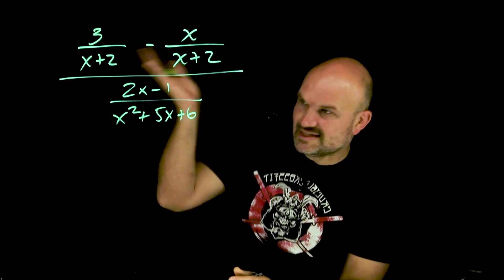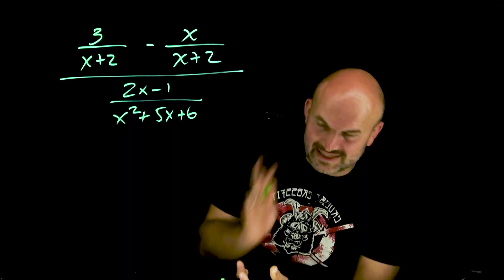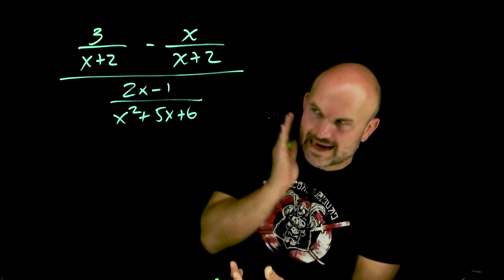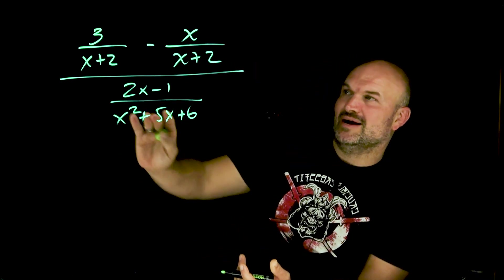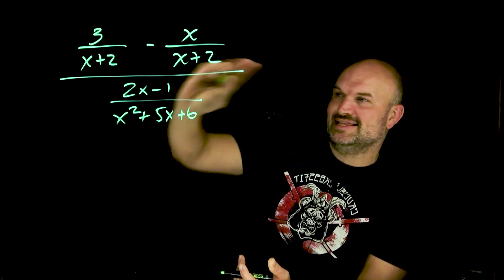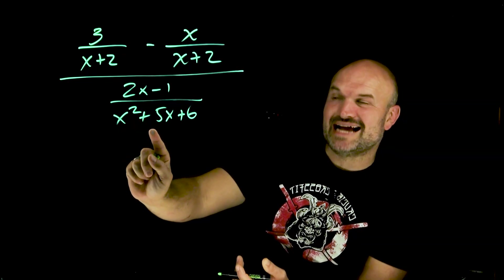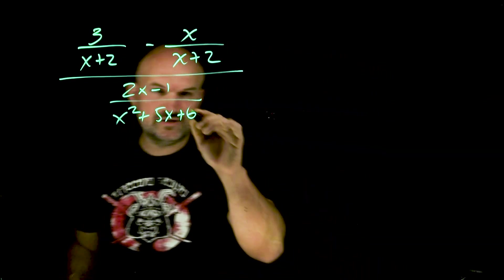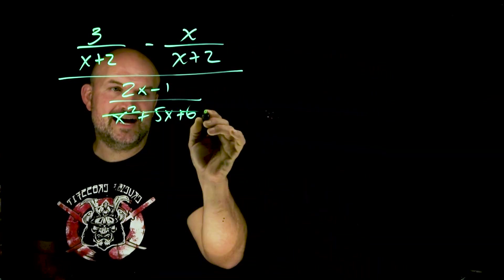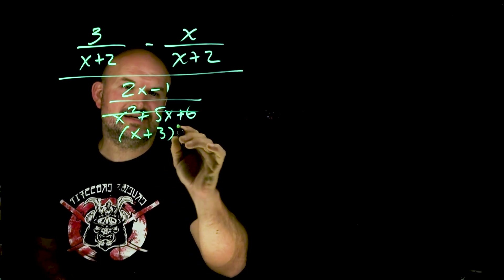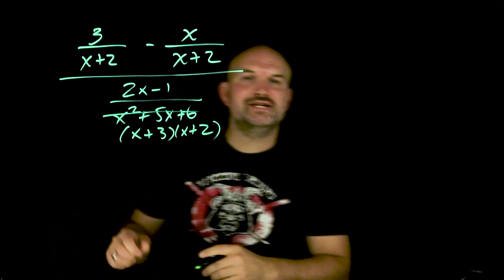So in this case, we have now three different denominators. The first step is always to factor, factor, factor. I can't factor anything else except for here — this should be glaringly obvious to you. Factor it: what two numbers multiply to give me 6 and add to give me 5? That's going to be x plus 3 times x plus 2.